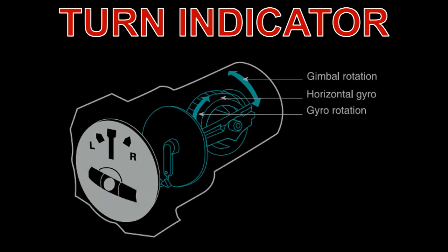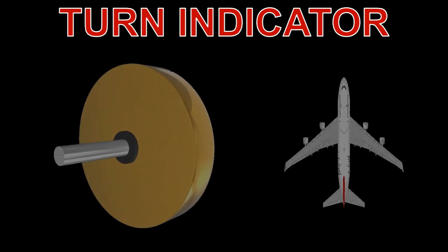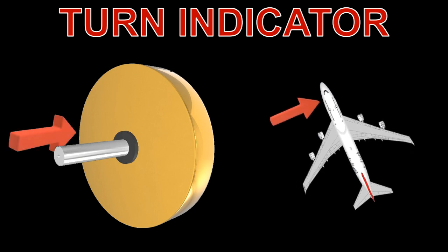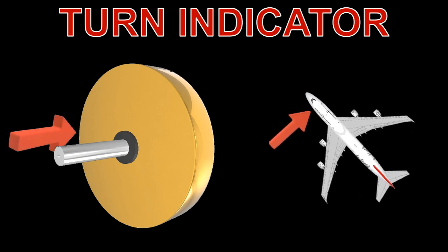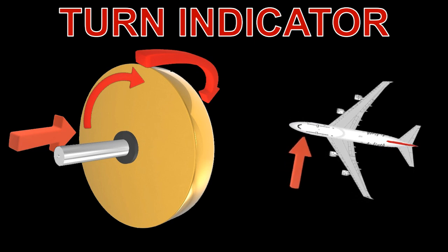The turn indicator is a gyroscopic instrument that works on the principle of precession. The gyroscope is mounted in a gimbal. The gyro's rotational axis is in line with the pitch axis of the aircraft, while the gimbal has limited freedom around the roll axis of the aircraft. As the aircraft turns, a torque force is applied to the gyroscope around the vertical axis, which causes gyroscope precession around the roll axis.